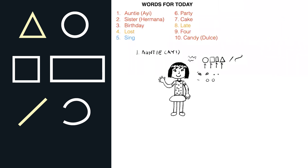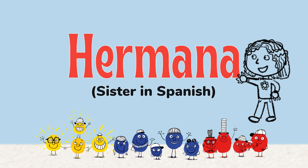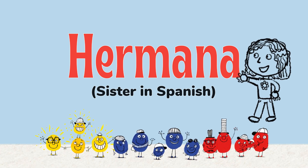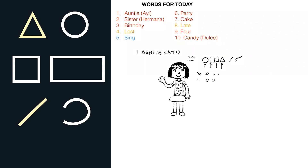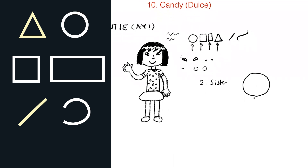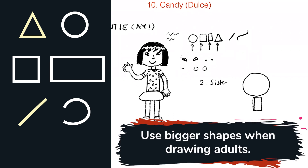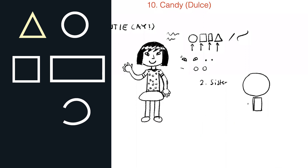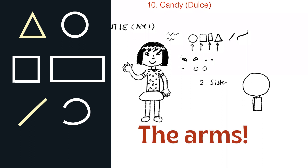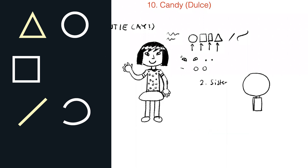Maybe Auntie is coming to Sister Hermana's birthday party — maybe that could be a story. So what's the first shape we should draw for Sister? And the difference between adults and kids is that adults have bigger bodies and bigger heads. What shape do we need to use for arms and legs? Rectangles — good job.